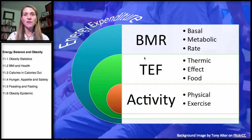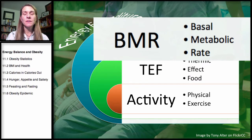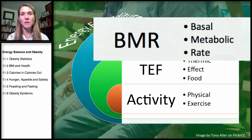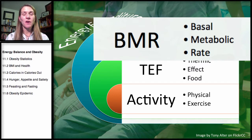Looking at the calories-out side of the equation — this is energy expenditure. The greatest portion comes from our basal metabolic rate. Our basal metabolic rate is essentially the energy expenditure needed for all the unconscious activities we perform: breathing, heart beating, making enzymes and proteins, and regenerating our tissues.